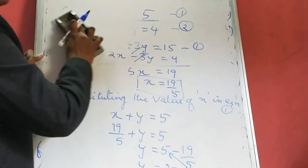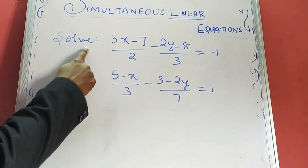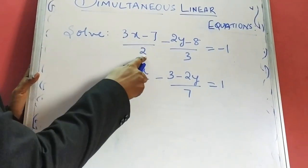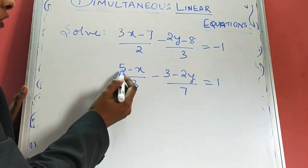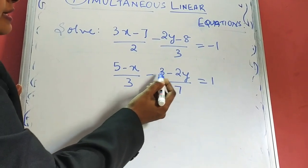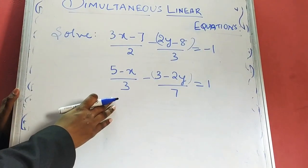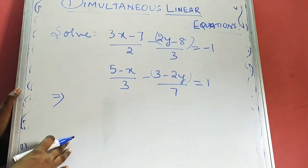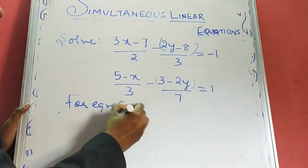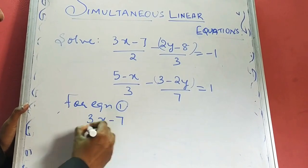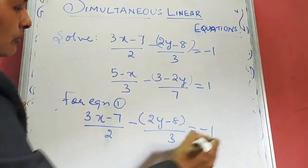Let me do another example. We have: (3x minus 7) by 2 minus (2y minus 8) by 3 is equal to minus 1 as equation 1, and (5 minus x) by 3 minus (3 minus 2y) by 7 is equal to 1 as equation 2. The equations are in fraction form. We have to bring them into linear form. Let's take equation 1 first.